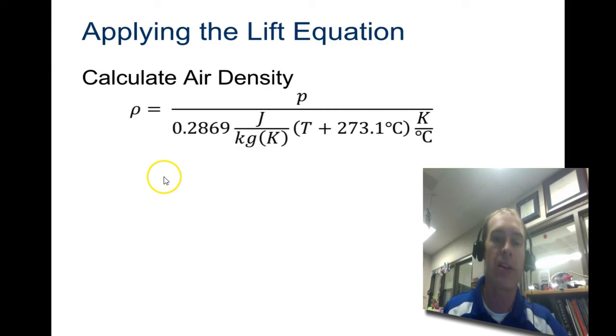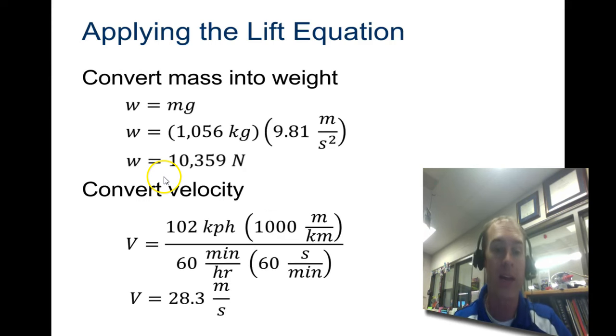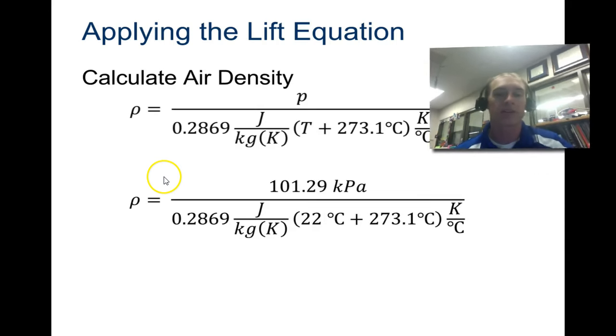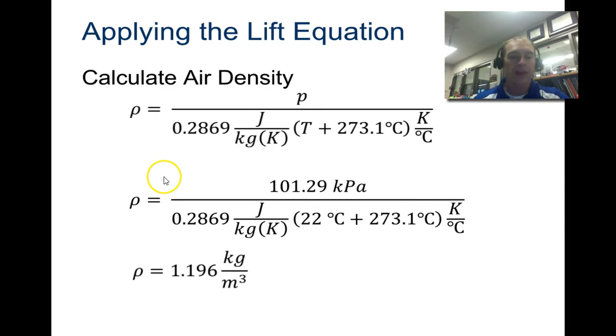Now we need to calculate air density. You've already made an Excel equation for this. If you wanted to use that and actually even add some of these other equations, especially that velocity one and the weight one, you can make yourself a whole Excel equation sheet. If we convert that, we're going to get a density of 1.196.